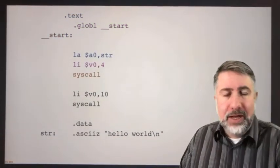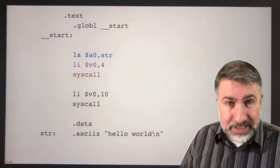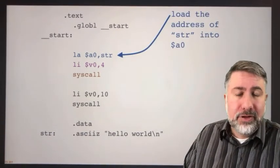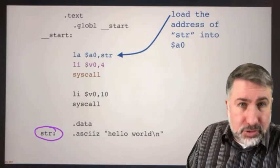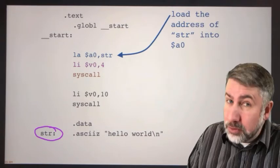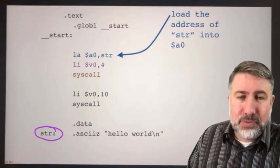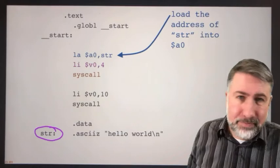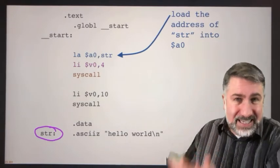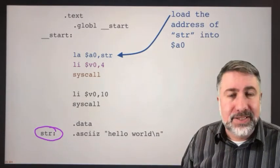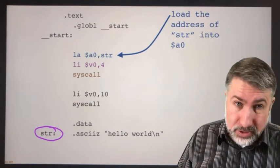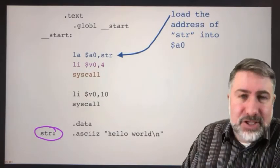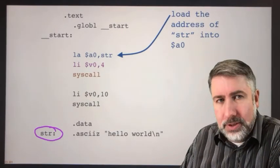The next three lines are code required to ask the operating system to display text. First, we load the address of the label 'string' into register A0. If you've looked at the MIPS hardware, you already know this is impossible in a single instruction because we can't put a 32-bit number into a register that way. So this is called a pseudo-instruction — it doesn't translate to a real instruction, but translates to a few instructions. The intent is to load an address into register A0.